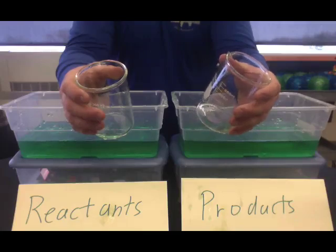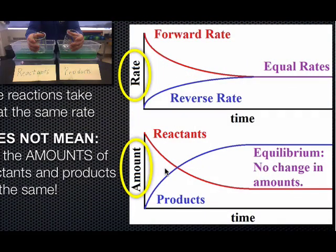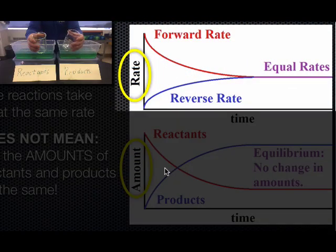So if we go back to the graph on our slide, we would see that this is the first one, or the top one, where the rate flatlines and becomes equal.